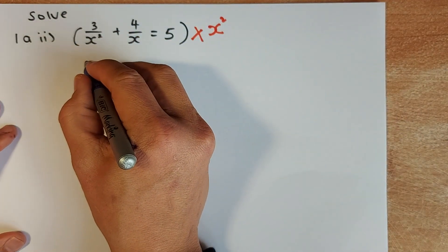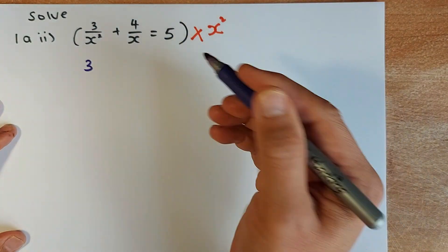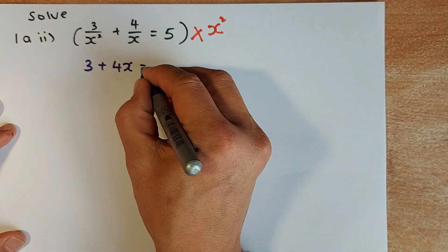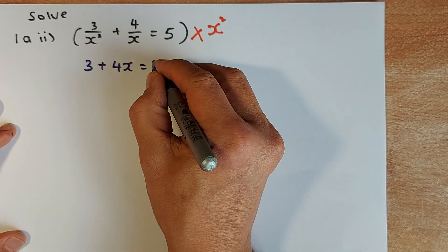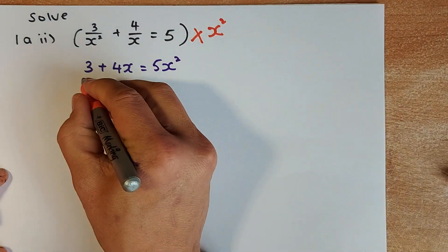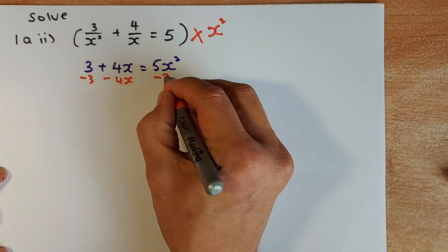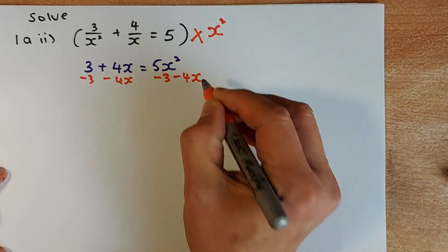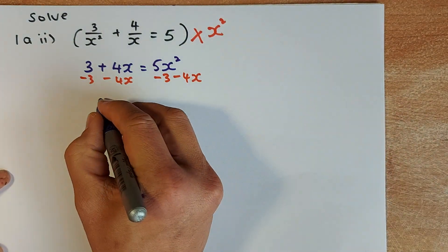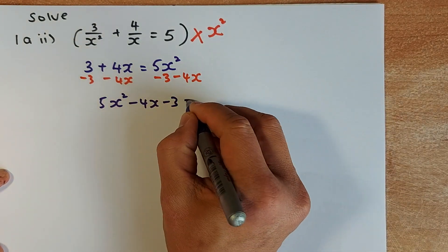So what's left in the numerator is 3. On the second expression, x squared divided by x is x, so x times 4 is 4x. And the last one, 5 multiplied by x squared is 5x squared. Now I'm going to take away the other factors — if I subtract 3 and 4x on both sides, the left-hand side becomes 0, and the right-hand side becomes 5x squared minus 4x minus 3 equals 0.